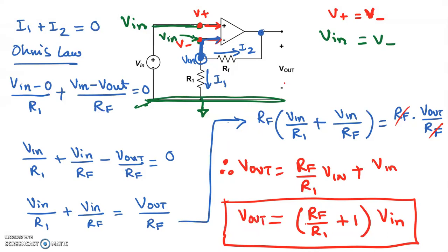There's no negative sign, so the voltage polarity of Vout and Vin are the same. For example, if Rf equals 10 kilohms and R1 is 1 kilohm, then Rf over R1 is 10, plus 1 equals 11. So the total gain is 11 and Vout equals 11 times Vin. If Vin is 1 volt, Vout equals 11 volts, and both Vout and Vin have positive polarity — the output polarity is the same as the input polarity.